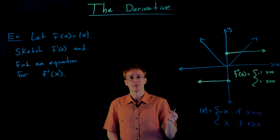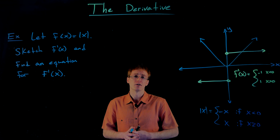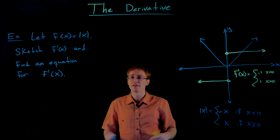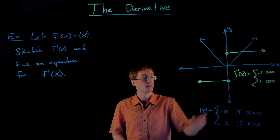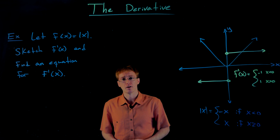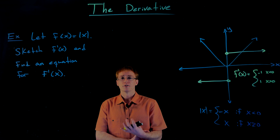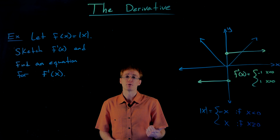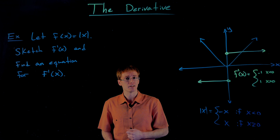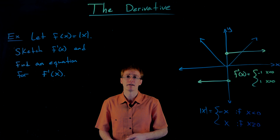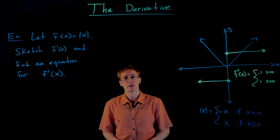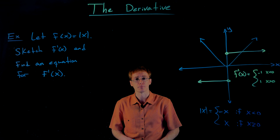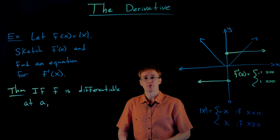This is an important example to keep in mind because it relates the ideas of differentiability and continuity. We can see that our original absolute value function is continuous everywhere, but it is not differentiable everywhere — it fails to be differentiable at x equals zero.